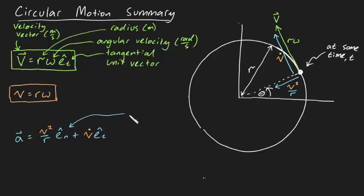Where en is the normal unit vector, v dot is the time derivative of speed, dv dt, in meters per second squared, and a is the acceleration vector in meters per second squared.